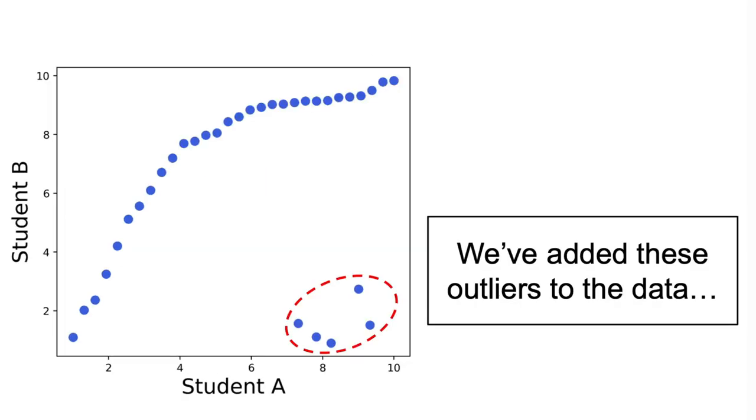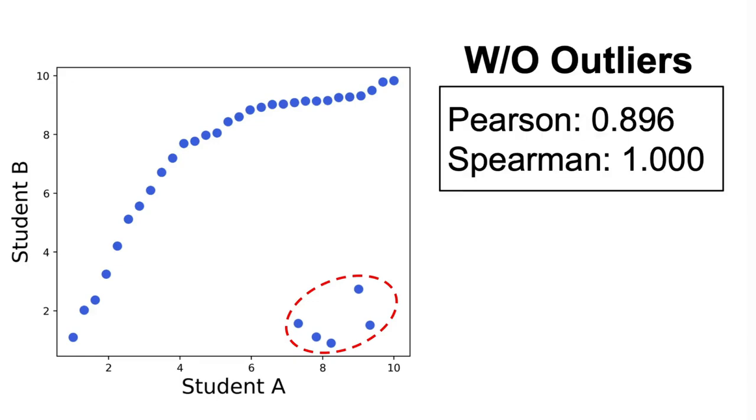Secondly, another significant advantage of the Spearman correlation is its robustness to outliers. In the Pearson correlation, outliers can heavily influence the results as it relies on the actual values of the data points. However,